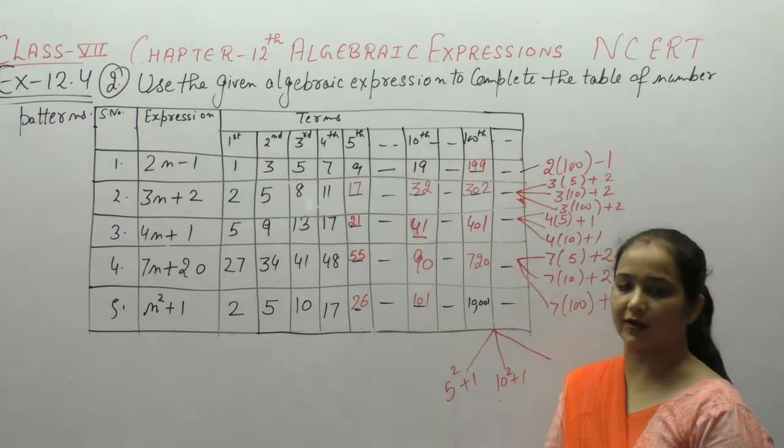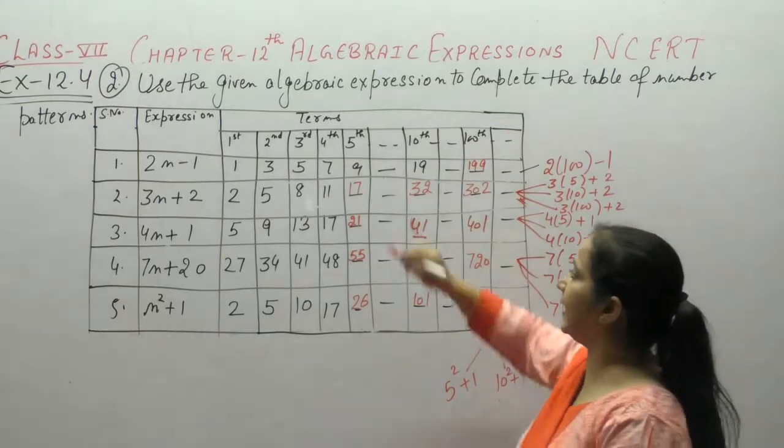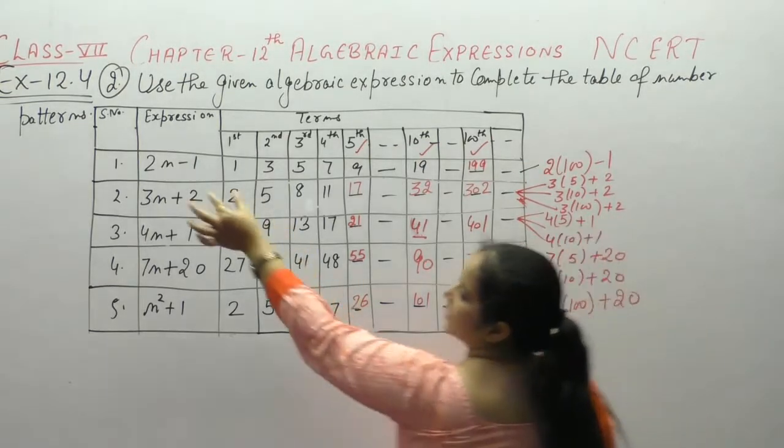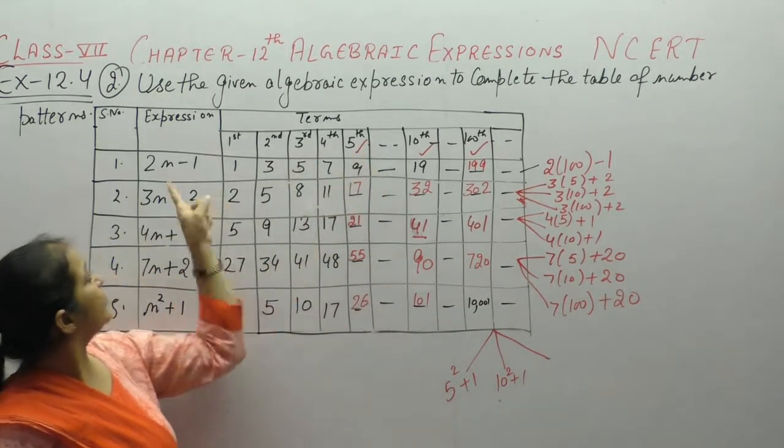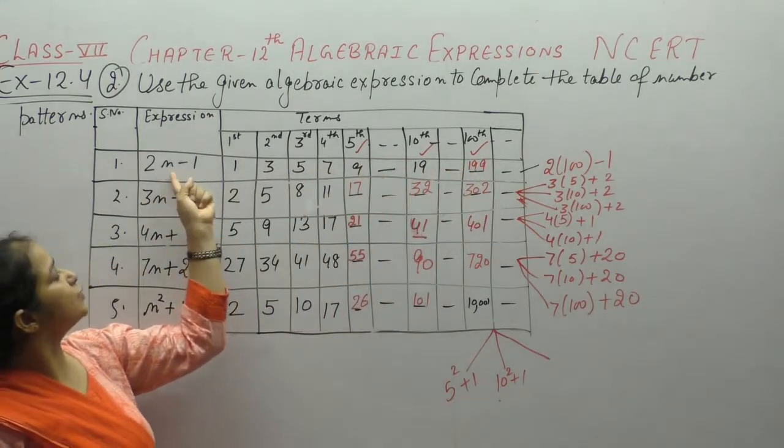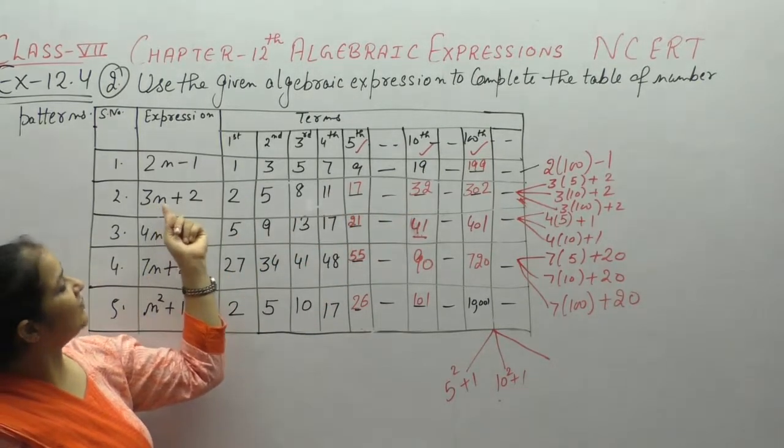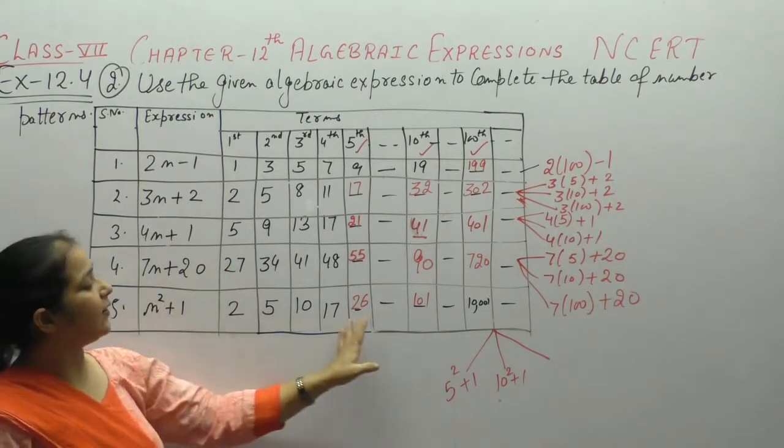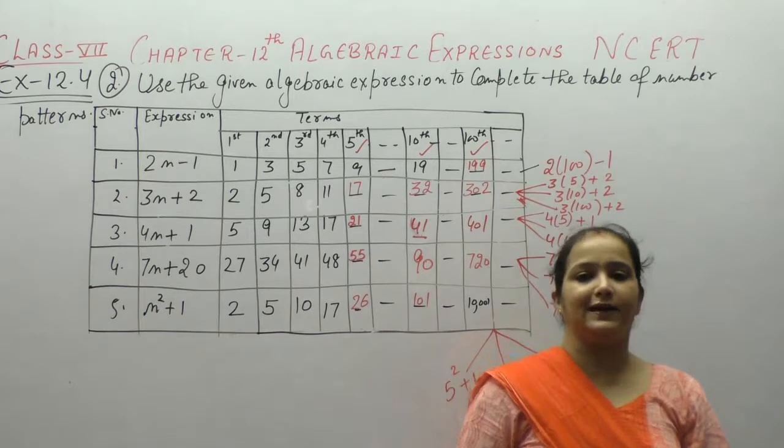This term is given. जो भी यहाँ पे term है, वो हम value put करेंगे, n की. जैसे 5th term, 10th term और 100th term. तो जो expression given है, हम n की corresponding values में put करते जाएं. For example, n को 100 put किया: 100 into 2, 200 minus 1, 199. Similarly, यहाँ पे n को 5, 10 और 100 put करेंगे. बस expression में n की value put करेंगे and then solve.